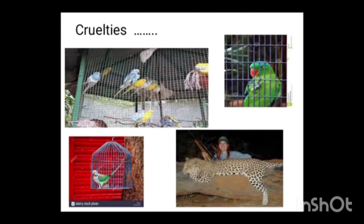Now let us see the cruelty against animals. People buy and sell them like commodities. Birds like parrot, lovebirds, pigeons, etc. are kept in a cage for a lifetime. Many people kill animals for commodities like horn, skin, etc., for the use of leather as well as some other products. So cruel, isn't it?